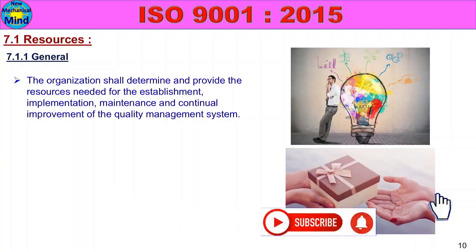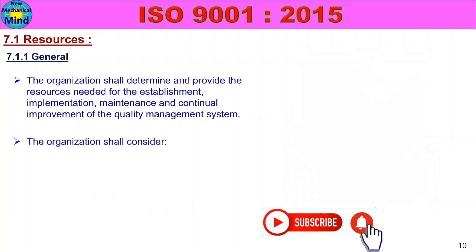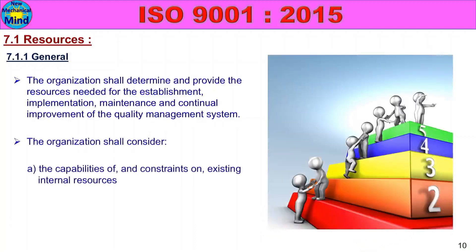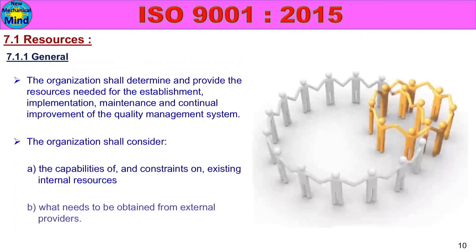The organization shall consider the capabilities of and constraints on existing internal resources, and what needs to be obtained from external providers. These are the key points of 7.1.1 General.